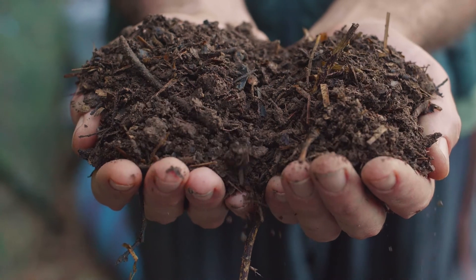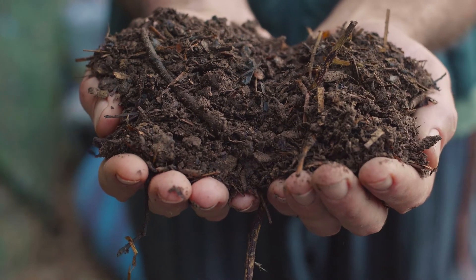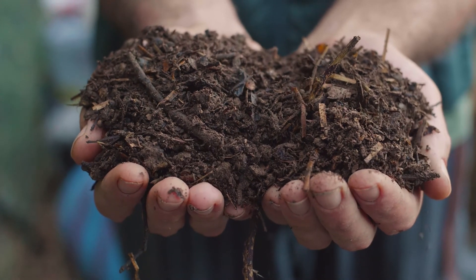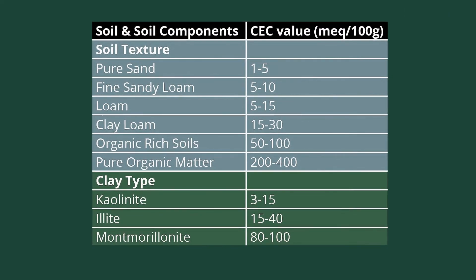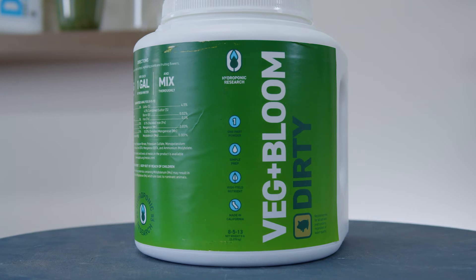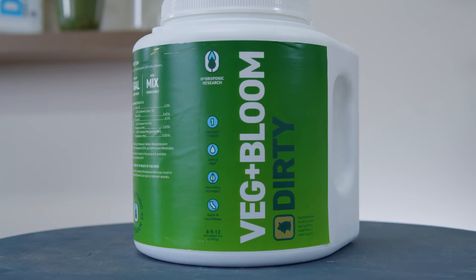Soil is everywhere — it's what humans first used to domesticate crops. It's the most conventional form of growing media, but it can vary widely depending on what's in it. The ratios of inputs will vary a soil's field capacity and air porosity and, as the chart shows, can deeply affect CEC. With the exception of peat moss, most soils will have CECs well above any hydroponic substrate.